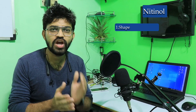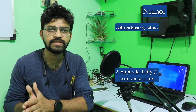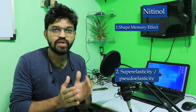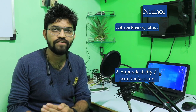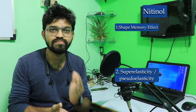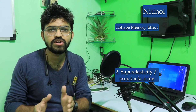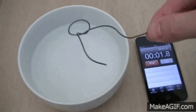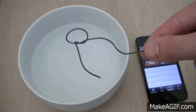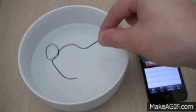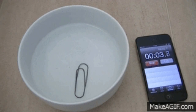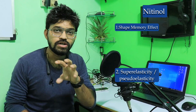Nitinol has different characteristics such as the shape memory effect and a unique property called superelasticity or pseudoelasticity. The shape memory effect was covered in a previous video on shape memory alloys (SMAs) — how these materials undergo certain deformation at lower temperatures, and after the application of heat they regain their previous shape before deformation.